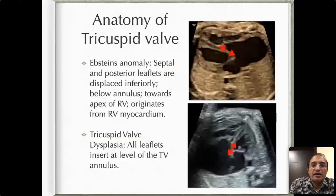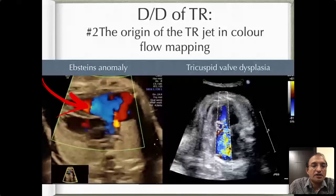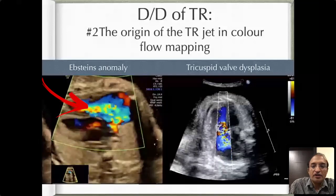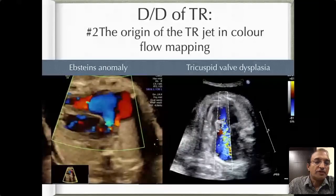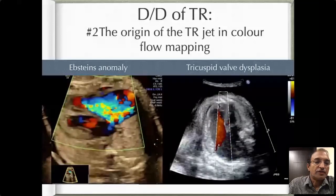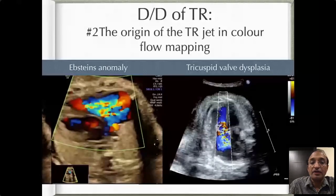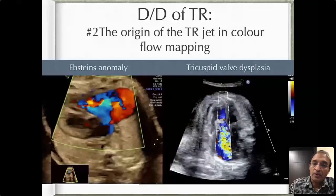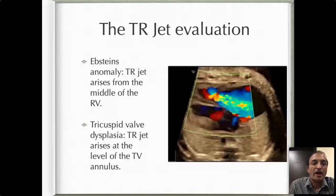The second is a simple radiological clue: the origin of the TR jet on color Doppler. In Ebstein's anomaly, even though we call it tricuspid regurgitation, the TR seems to originate in the middle to apical portion of the RV because the tricuspid valve is displaced downwards. In tricuspid valve dysplasia, the TR begins at the level of the normal tricuspid valve. You can see clearly in the still image that in Ebstein's the TR jet arises from somewhere in the middle of the RV cavity.